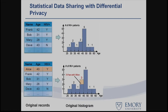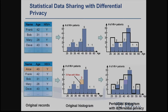The main intuition for differential privacy is to add calibrated noise to the histogram counts, such that the resulting statistics are indistinguishable with respect to whether Alice is in the database or not.